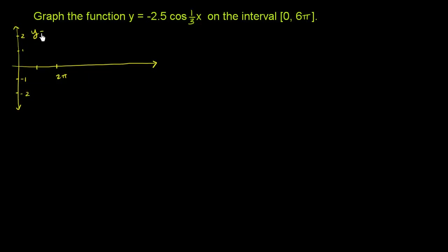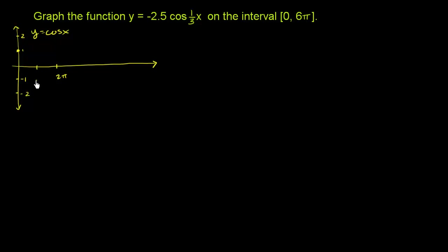I'm going to graph y is equal to cosine of x, just between the interval 0 and 2 pi. Obviously it's a periodic function - it'll keep going in the negative and positive directions. When x is equal to 0, cosine of 0 is 1. When x is equal to pi, cosine of pi is negative 1.